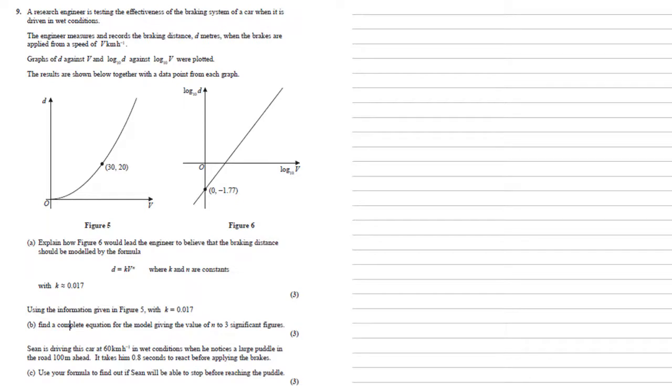For part c, Sean is driving this car at 60 kilometers per hour in wet conditions when he notices a large puddle in the road 100 meters ahead. It takes him 0.8 seconds to react before applying the brakes. Use the formula to find out if Sean will be able to stop before reaching the puddle.